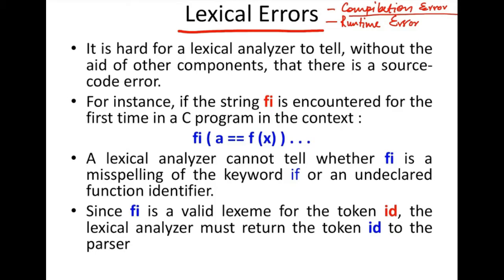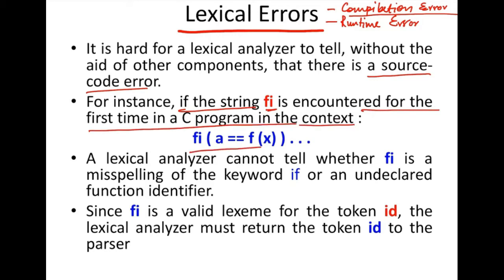It is hard for the lexical analyzer to tell without the aid of other components that there is a source code error. Complex source code errors are quite hard for the lexical analyzer to detect. But for instance, if the string 'fi' is encountered for the first time in a C program, instead of 'if', the lexical analyzer cannot tell whether 'fi' is a misspelling, because it will match the pattern of an identifier and be entered into the symbol table as an identifier.